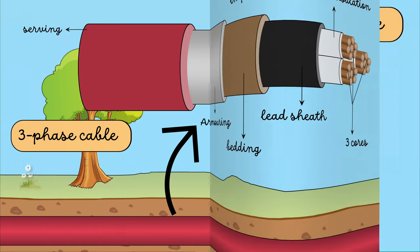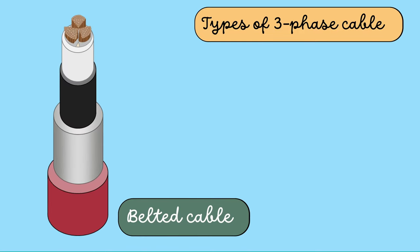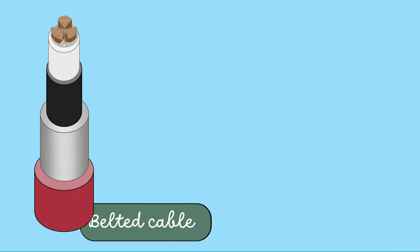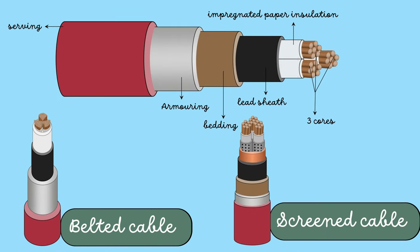There are three types of underground power cables that are usually used for three-phase services: belted cables, screened cables, and pressure cables. The construction of belted cables and screened cables are more or less similar to the general construction except for some minor differences.